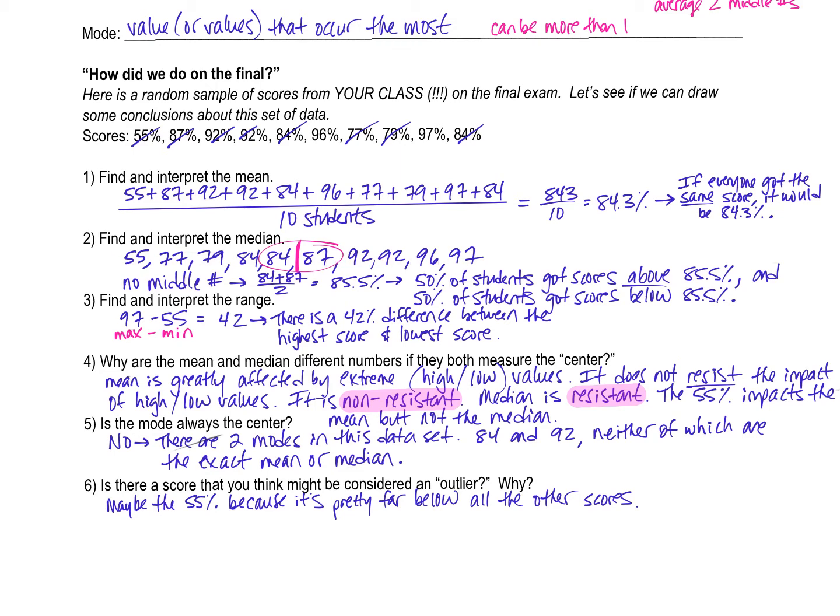But as you can see, when you have 10 numbers, you can divide your list perfectly in half. There is not a number that is right in the middle. Therefore, we have two numbers that are right in the middle that, in order to come up with the median, I need to average those numbers together. And I get 85.5%. It's halfway between 84 and 87.